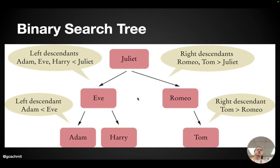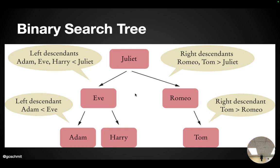If you look at all of the left descendants of Juliet — which includes Eve, Adam, and Harry — all of them come alphabetically, or technically lexicographically, before Juliet.